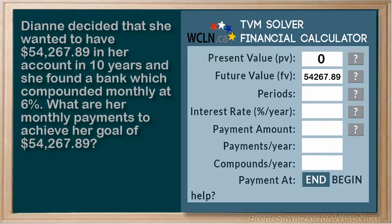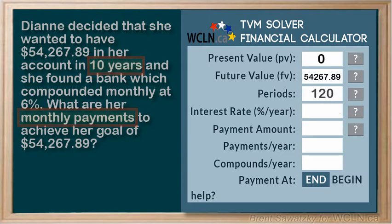Now the periods — we see that it's 10 years and we're paying monthly. The periods is the number of payments made in this scenario. So 10 times 12 is 120.